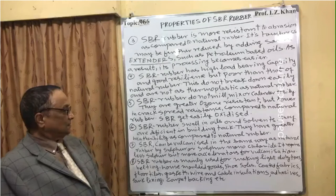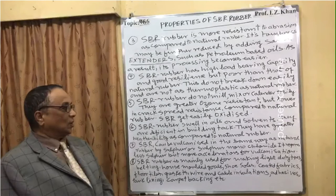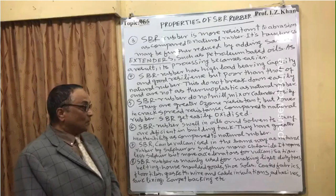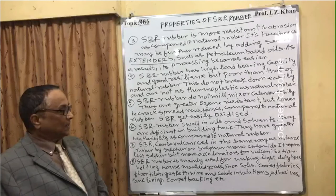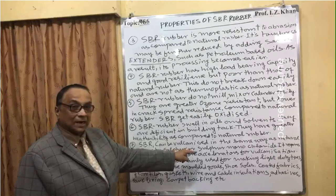Point seven: SBR can be vulcanized in the same way as natural rubber, using sulfur or sulfur monochloride. It requires less sulfur but more accelerators for vulcanization. This is an important point — less sulfur but more accelerators are required.